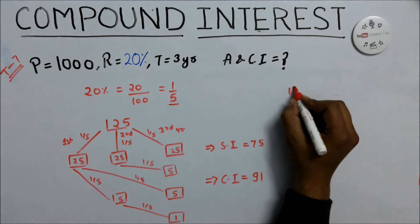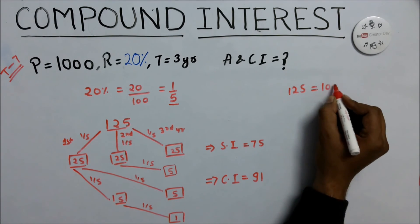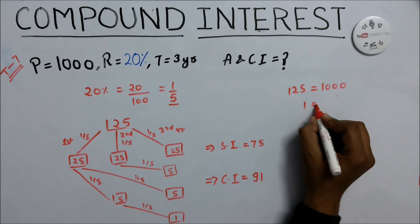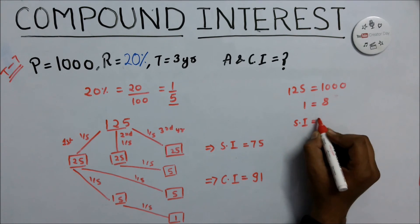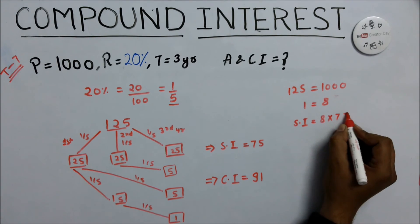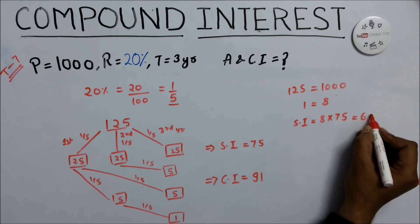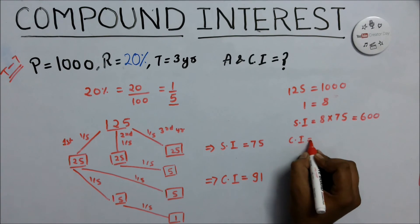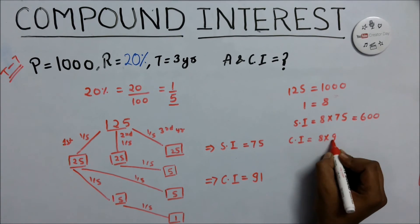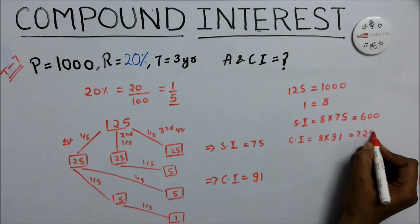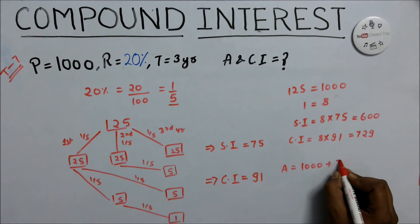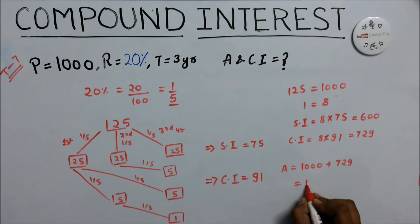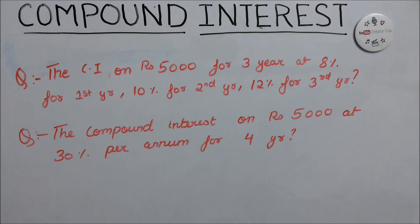Since 125 equals 1000, one part equals 8. Simple interest equals 8 times 75 equals 600. Compound interest equals 8 times 91 equals 728. Amount equals 1000 plus 728 equals 1728.